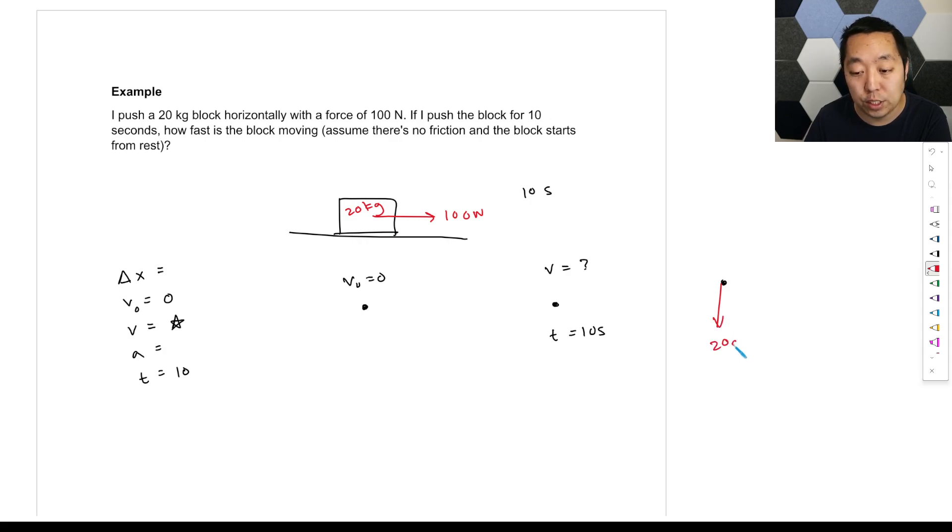So then we'd have 20G gravity acting downward, we'd have a normal force, we have 100 newtons going to the right. And then we are accelerating to the right, which is all we care about. If we say right is positive, then we would say doing F net equals MA, the only force horizontally is 100. The mass is 20. And so the acceleration is 5 meters per second squared. So that would be 5. And then we could do V equals V0 plus AT. And that's going to be 0 plus 5 times 10, and that's going to give you 50 meters per second.